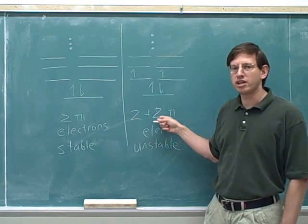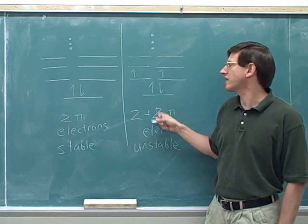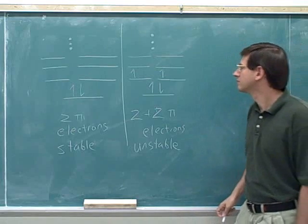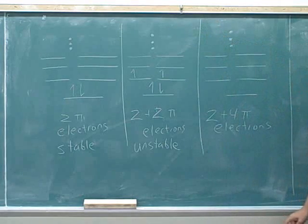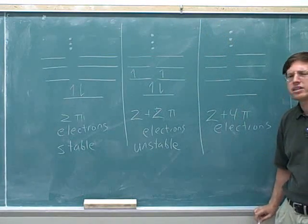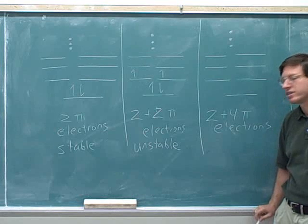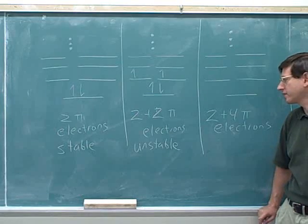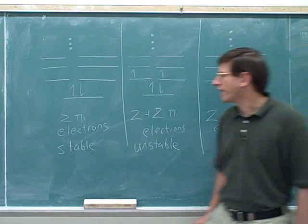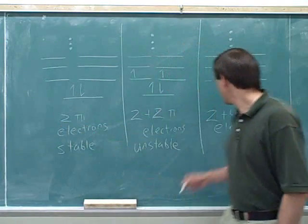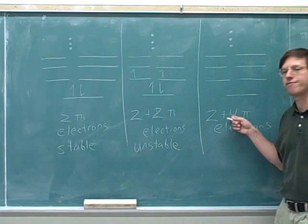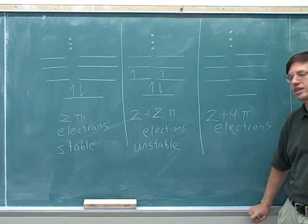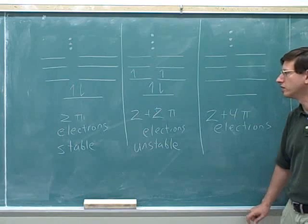So we've seen that if we add just two pi electrons, that'll be stable because they can be paired. But then if we add two more pi electrons, that will be unstable because they will be unpaired. Now let's think about a case where we have six pi electrons. We can think of that as the two pi electrons we started with and then adding four more, to give us six pi electrons total.